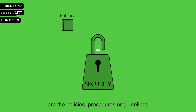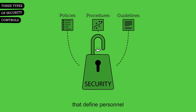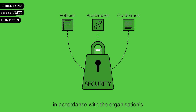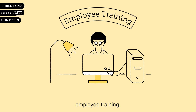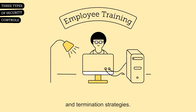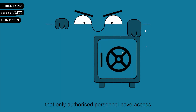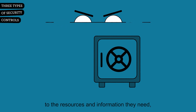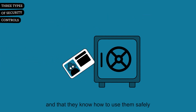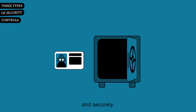Administrative controls are the policies, procedures or guidelines that define personnel or business practices in accordance with the organization's security goals. This would include a council's employee training and personnel recruitment and termination strategies. Administrative controls help to ensure that only authorized personnel have access to the resources and information they need, and that they know how to use them safely and securely.